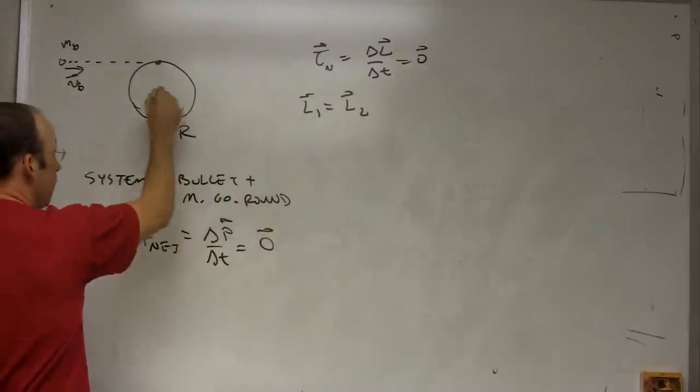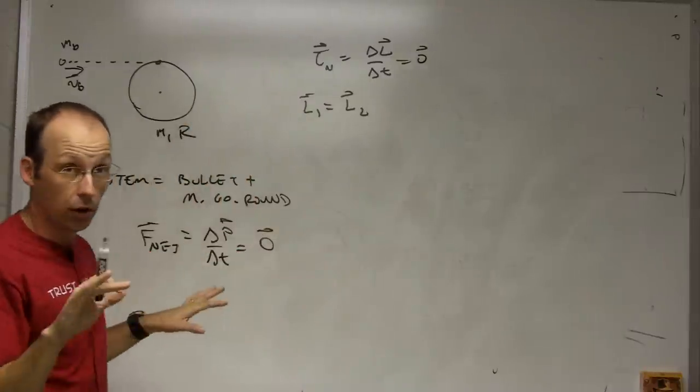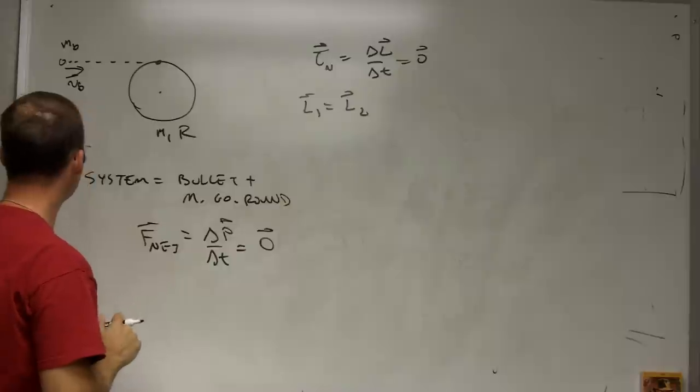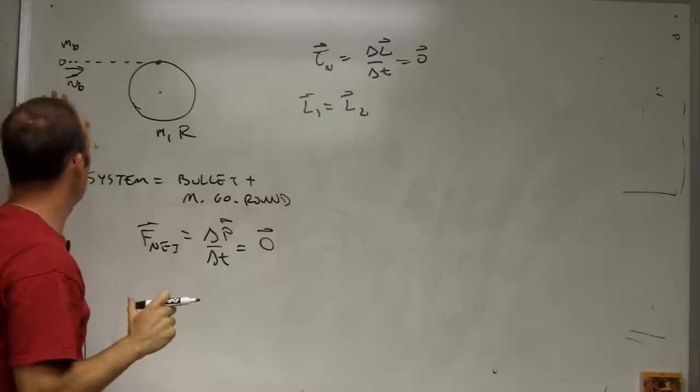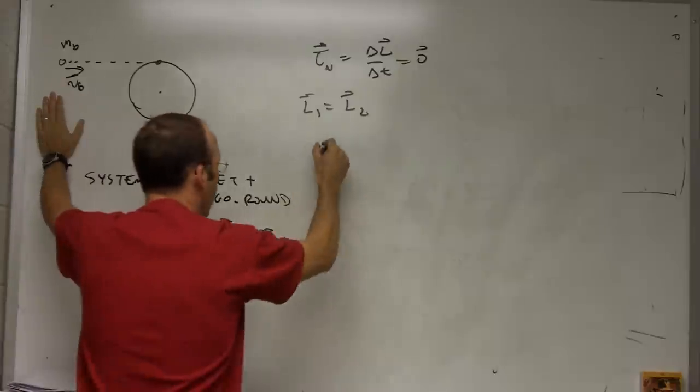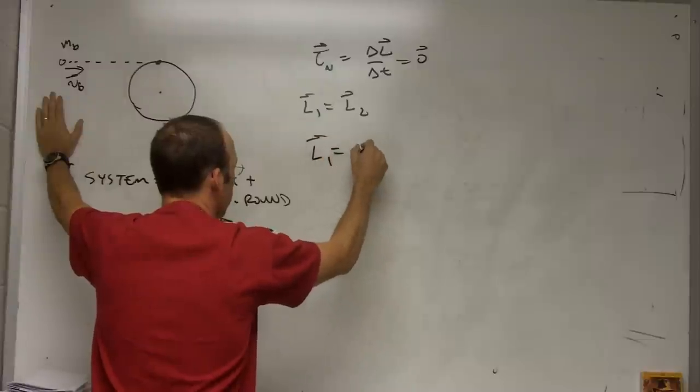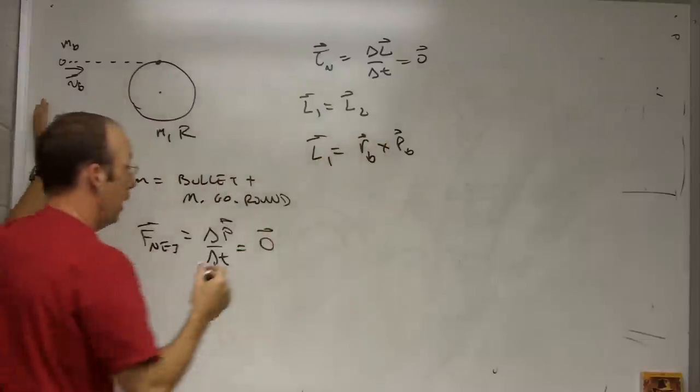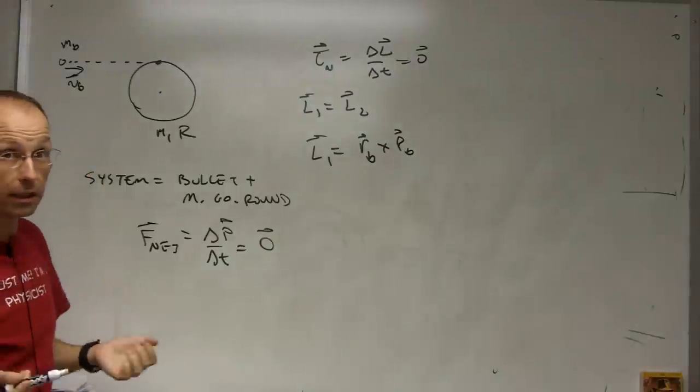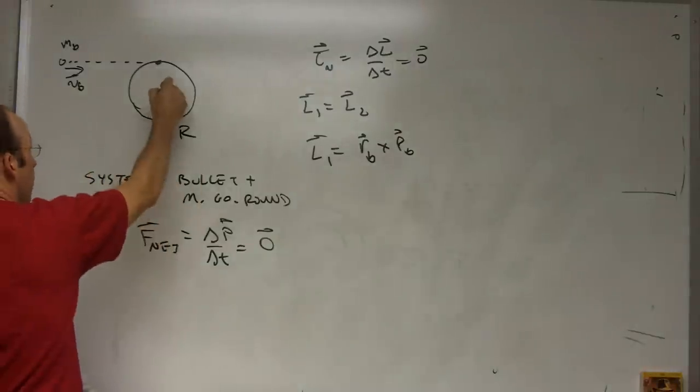So let's say this starts with an angular velocity of zero. I want to find the final. Okay. So what's the initial angular momentum? It's just due to the bullet. So L1 equals R bullet cross P bullet. And now you may be saying, well that's just crazy. And this is about the point right here, O.